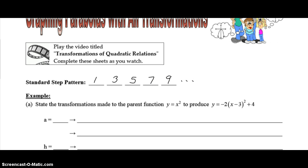You should get 1, 3, 5, 7, 9—it just continues with the odd numbers. If there is no stretch, compression, or reflection, which basically means if there is no A value, then your standard step pattern would still apply.